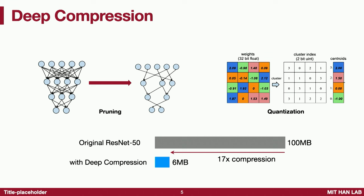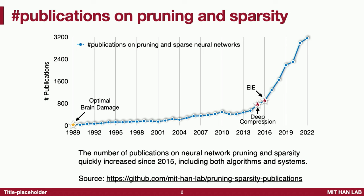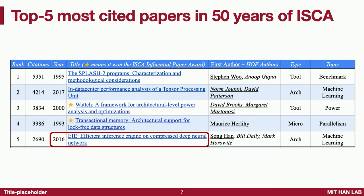Previously, I proposed a series of work starting with deep compression to prune and quantize neural nets to shrink model size, which is getting a lot of attention in recent years. Publications on pruning and sparsity are growing exponentially, both in the algorithms and systems communities, showing there is huge room by nudging the algorithm — changing what we run on the AI chip even before designing the chip. To accommodate pruning and sparsity, I designed the Efficient Inference Engine, now one of the top five most cited papers in the 50-year history of ISCA, the flagship conference on computer architecture.